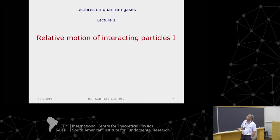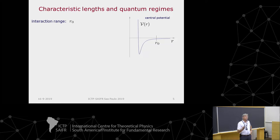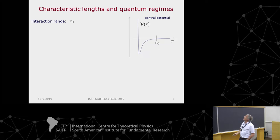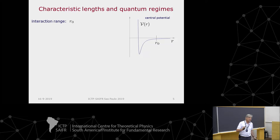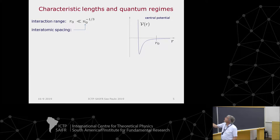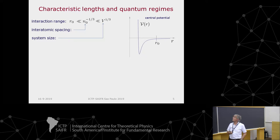The first lecture is about the relative motion of particles. Let's introduce some characteristic lengths. First, we introduce the range of the potential. If we plot the potential — a kind of Lennard-Jones potential — there is a point we call the range beyond which we can neglect the potential. Typically, the range of the interaction is much less than the inverse cubic root of the density, which is the inter-atomic spacing, which is in turn much less than the size of the box. That's the typical hierarchy of length scales.